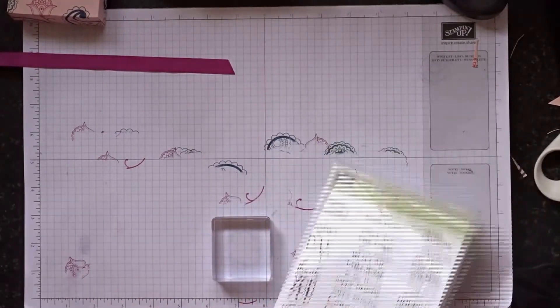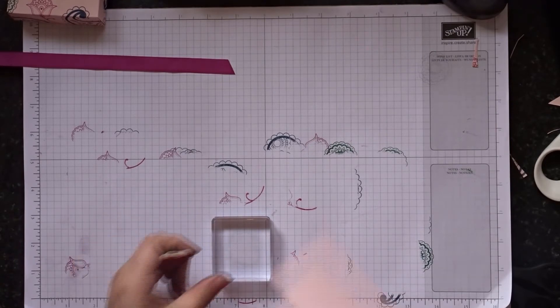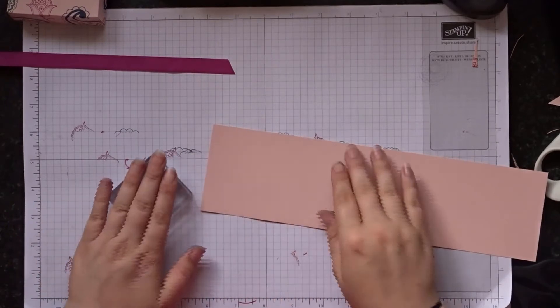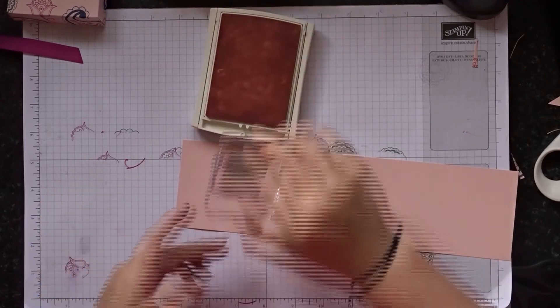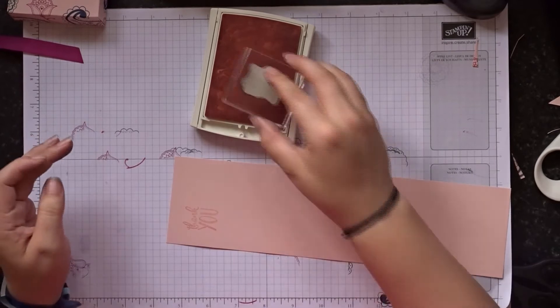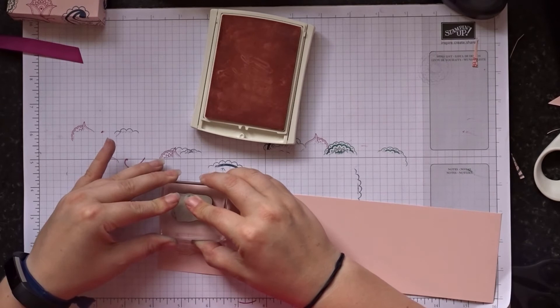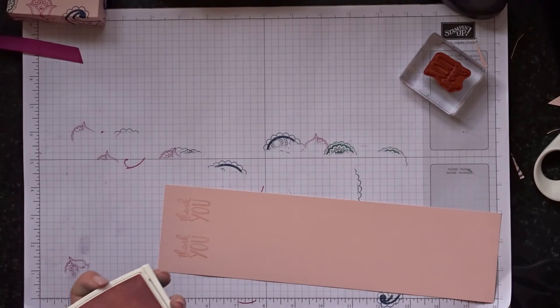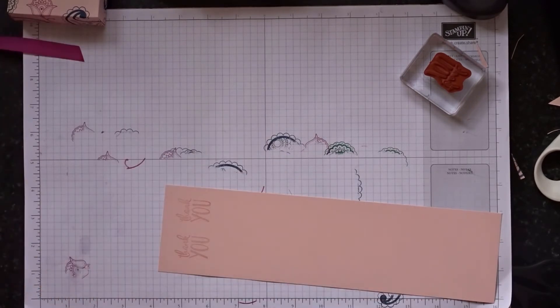So get your stamp, a bit of cardstock, and I think I'll do color on color, so I'm going to use the Powder Pink ink. And let's try that one again. And then I've got my decorative label punch.